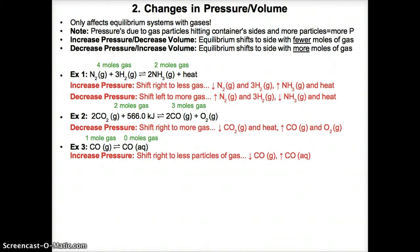In Example 3, there is 1 mole of CO gas on the left and zero moles of gas on the right since the aqueous species is not a gas. If we raise pressure — too many moles of gas particles — equilibrium shifts right to the zero moles of gas side. Moving towards CO(aq) raises its concentration since you produce it like a product, while CO gas concentration falls since you consume it like a reactant.